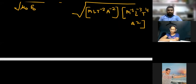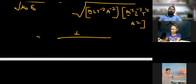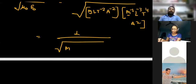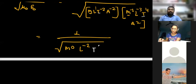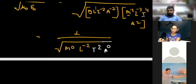Now observe carefully. Here M has power 1 and M has power minus 1, so in multiplication the powers add, giving M⁰. L has power 1 and minus 3, giving L⁻². T has power minus 2 and power 4, giving T². A has power minus 2 and power 2, giving A⁰.